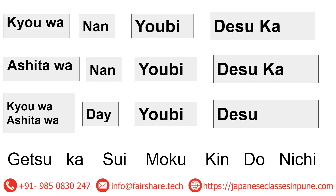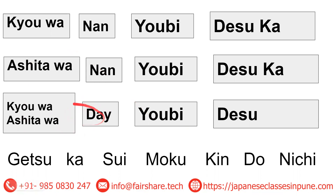Now we jump to asking or telling someone what day it is. The question is: 'Kyo wa nan yobi desu ka?' — meaning 'What day is it today?' 'Kyo' is today, 'wa' is the particle, 'nan yobi' means 'what day.' For the answer, let's say hypothetically today is Thursday: 'Kyo wa Mokuyobi desu' — you replace the day name. So the structure is: 'Kyo wa [day] desu.'